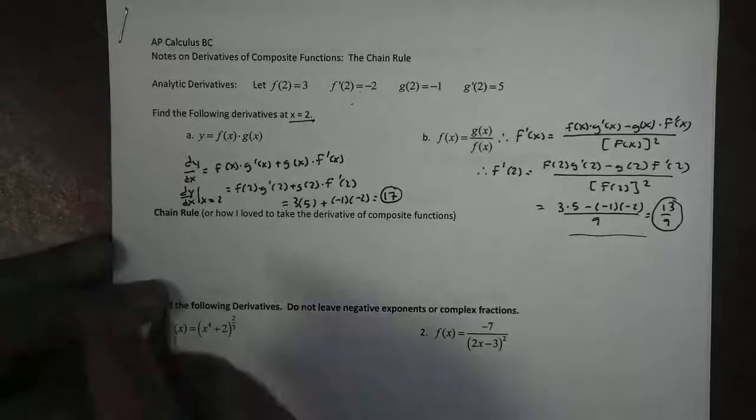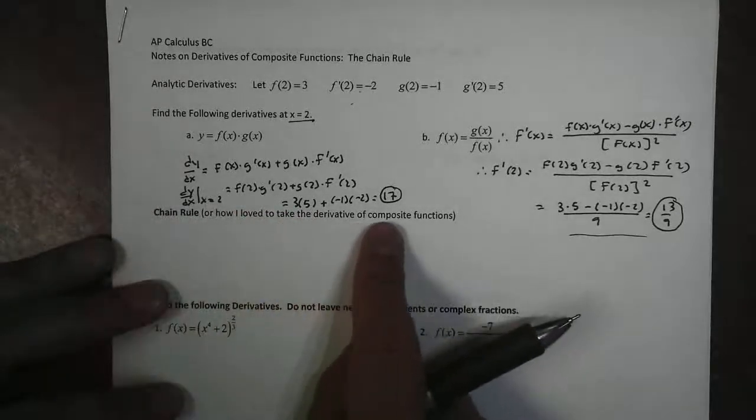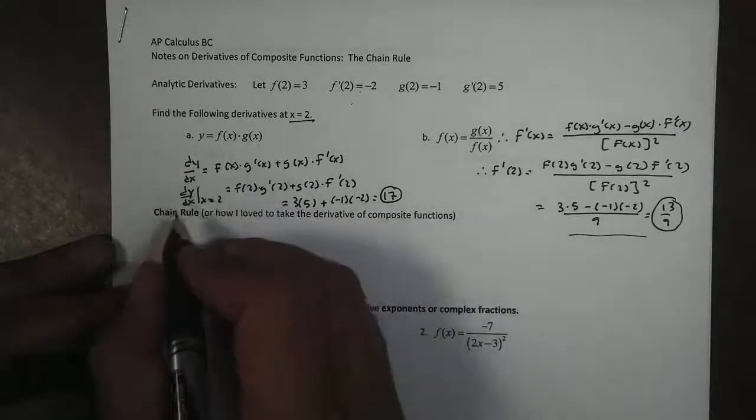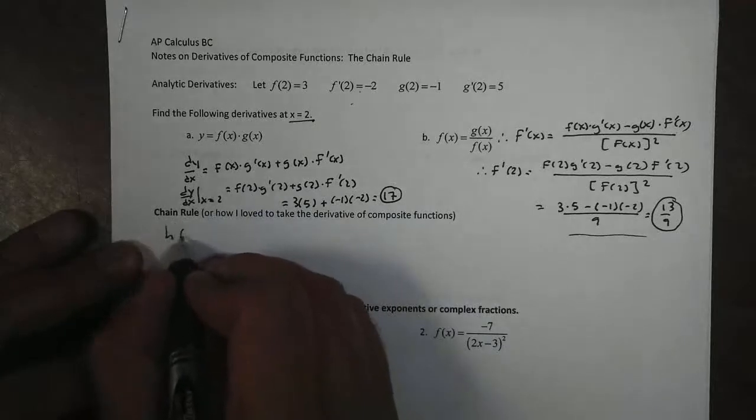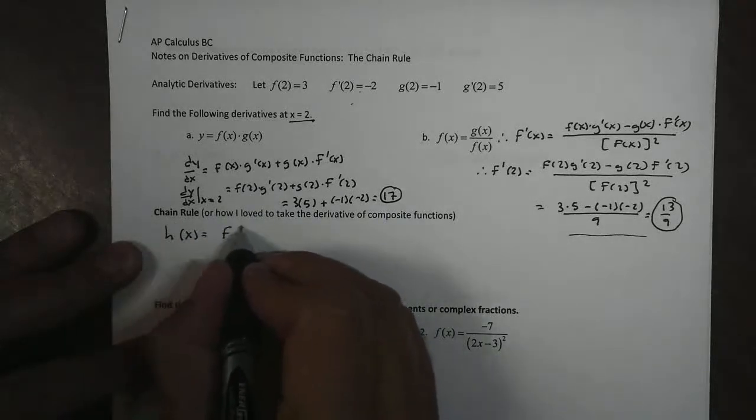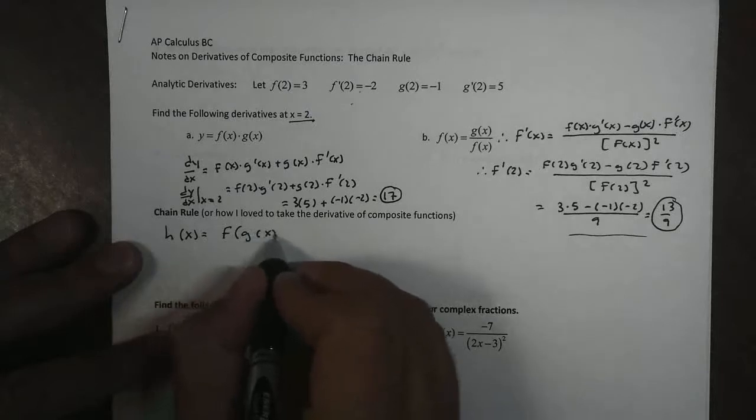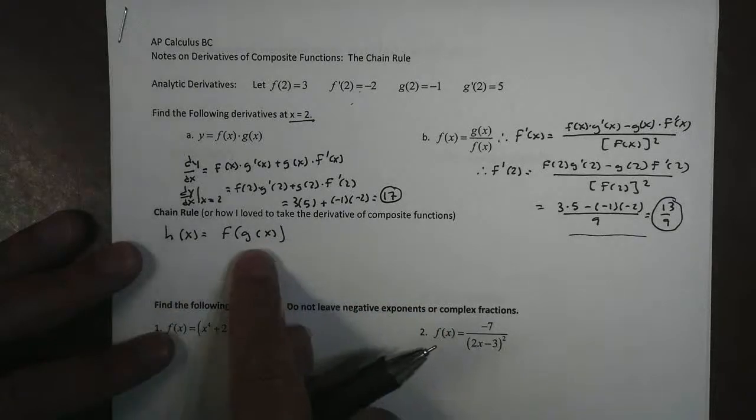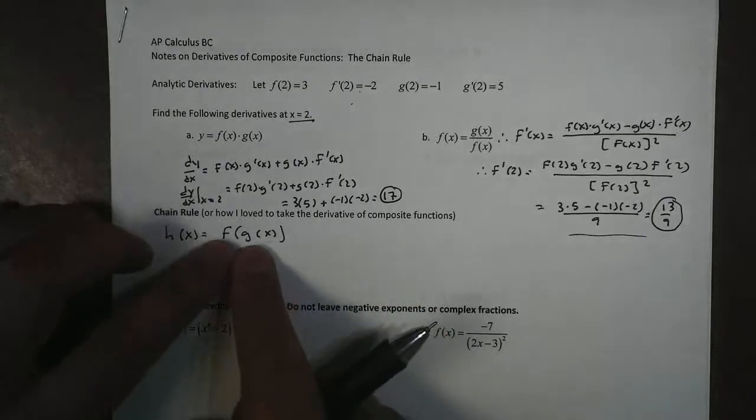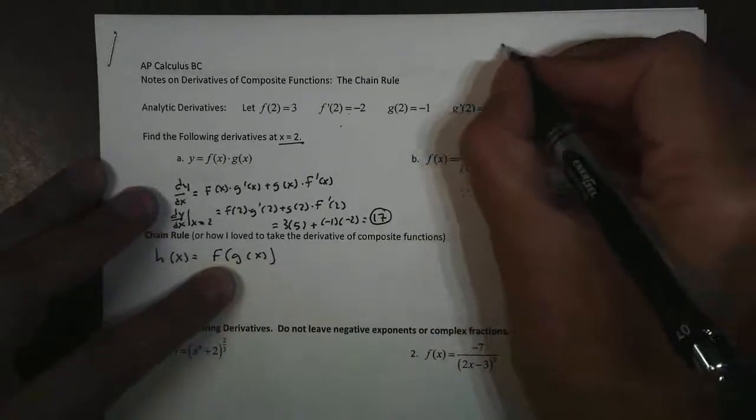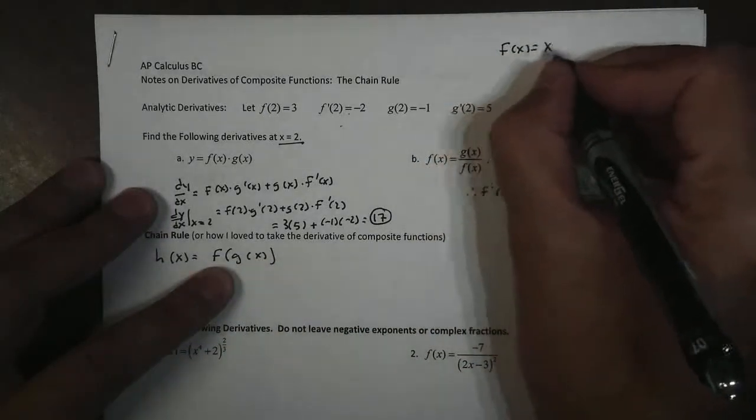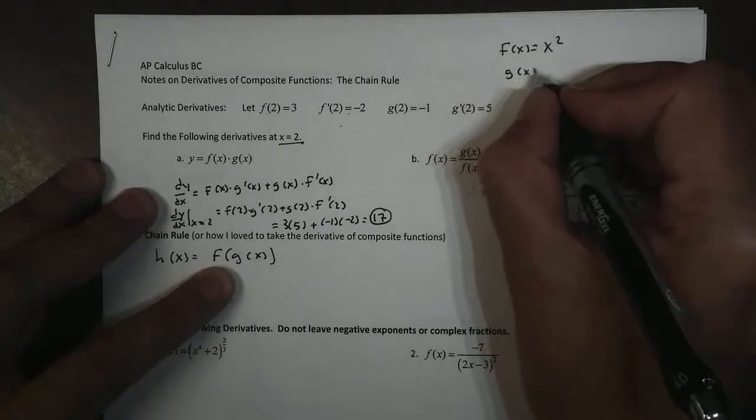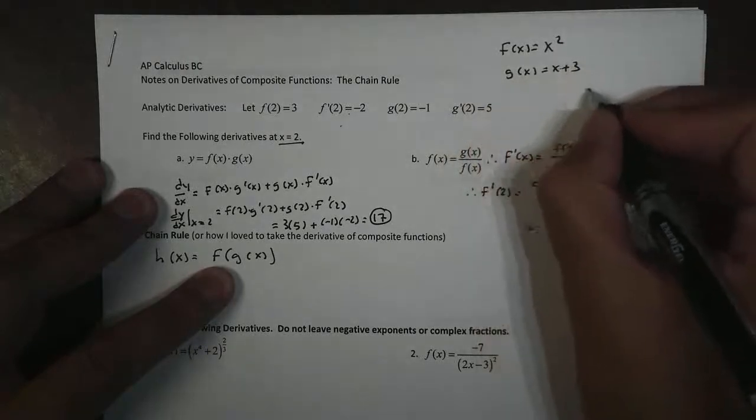So let's talk about the chain rule, or how we take the derivative of a composite function. You might remember a composite function is one function basically placed inside of another function. For example, f(x) and g(x). Like if I have, let's say, f(x) equals x squared and g(x) was x plus 3.